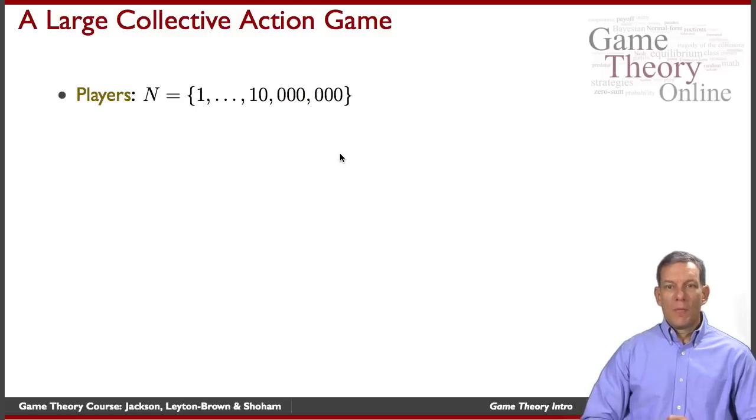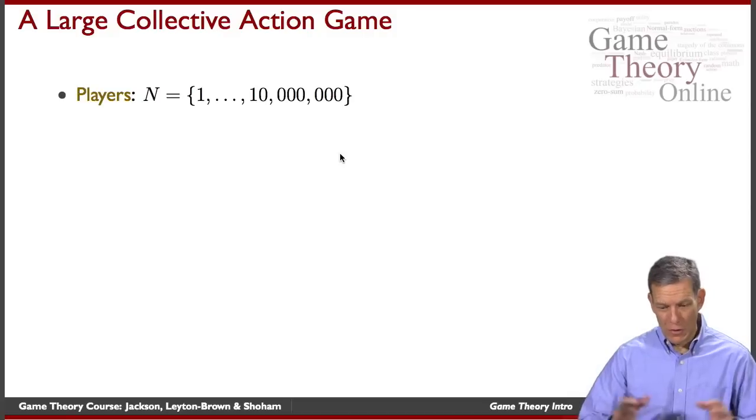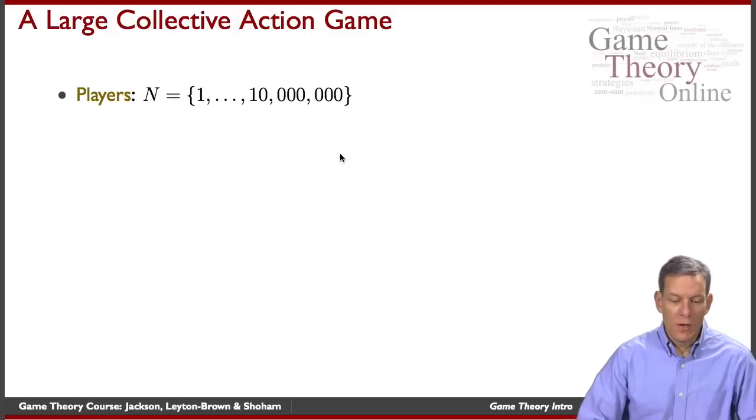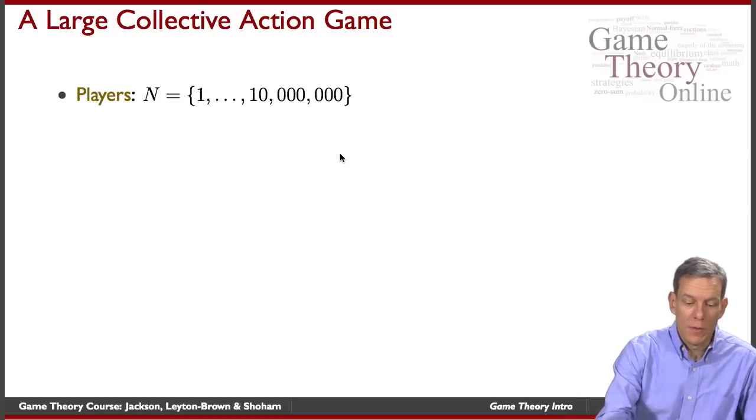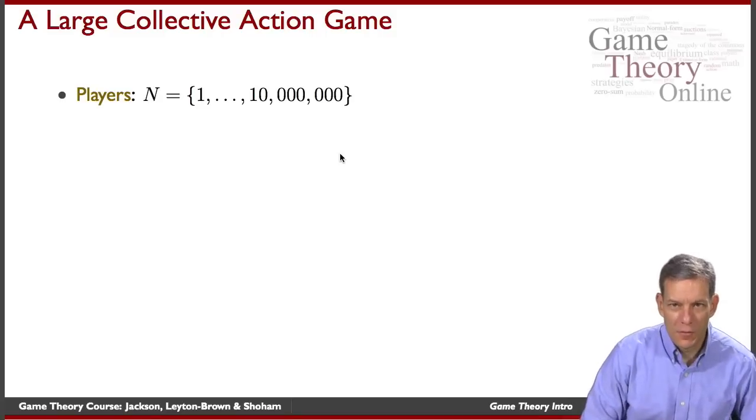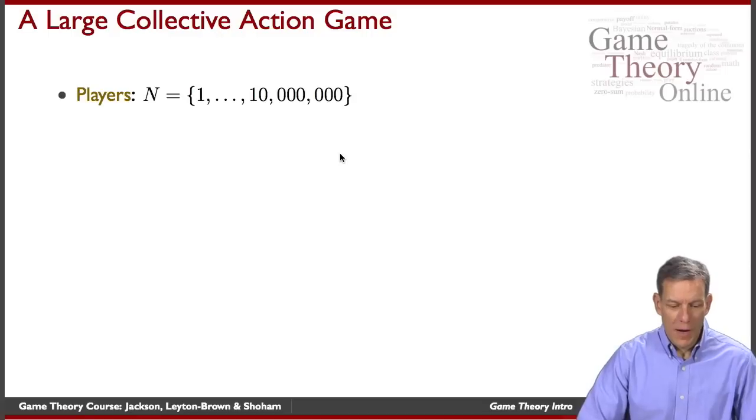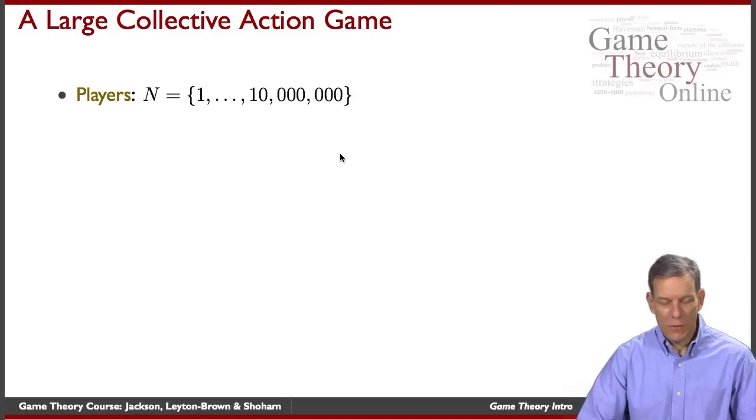Let's talk about another game that we won't be able to write down in such a simple form. Let's think of a large collective action game. For instance, whether or not a population wants to revolt against the government. Here we have many more players. Let's imagine that we have a population of 10 million players, so we're obviously not going to be able to write that down as a matrix on our screen. We can do that more abstractly. We'll have 10 million players.